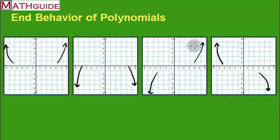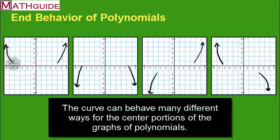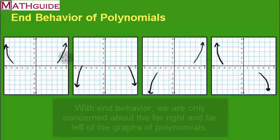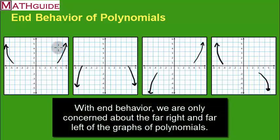So these are the four possibilities. I'm not really concerned about what happens in the middle of the graph — anything can happen there. The curve could do a whole bunch of maneuvers, or it could just dip down very low and come back up. All I want to do when talking about end behavior is concern ourselves with the extreme left and extreme right end of the graph.